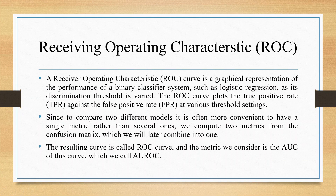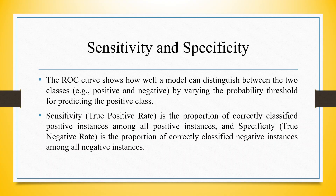Since to compare two different models it is often more convenient to have a single metric rather than several ones, we compute two metrics from the confusion matrix which we combine later on. The resulting curve is the ROC curve and the metric we consider is the AUC of this curve, called AUROC. The ROC curve shows how well a model can distinguish between two classes — positive and negative — by varying the probability thresholds for predicting the positive class. The true positive rate is the proportion of correctly classified positive instances among all positive instances, and specificity is the proportion of correctly classified negative instances among all negative instances.